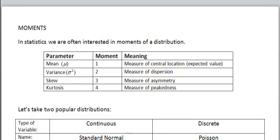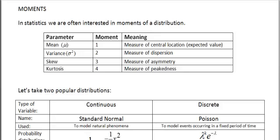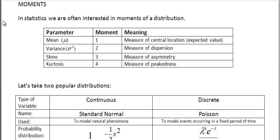In statistics, we are often interested in knowing the moments of the distribution. Just as a brief reminder, mean, variance, skew and kurtosis are first, second, third and fourth moment of the distribution.